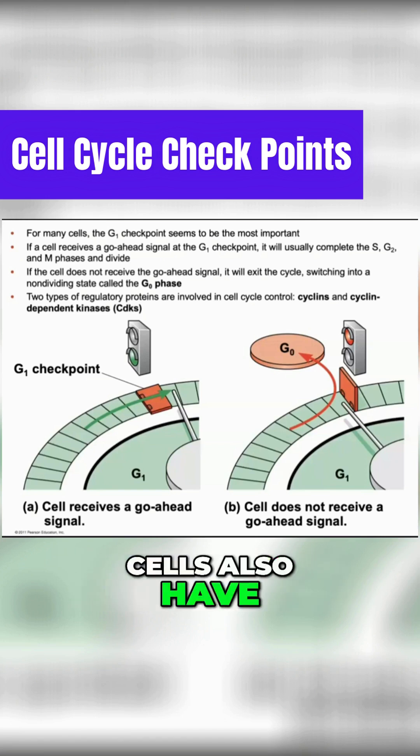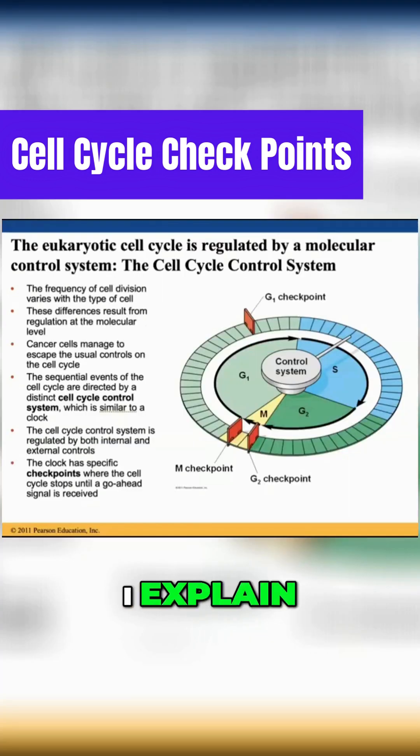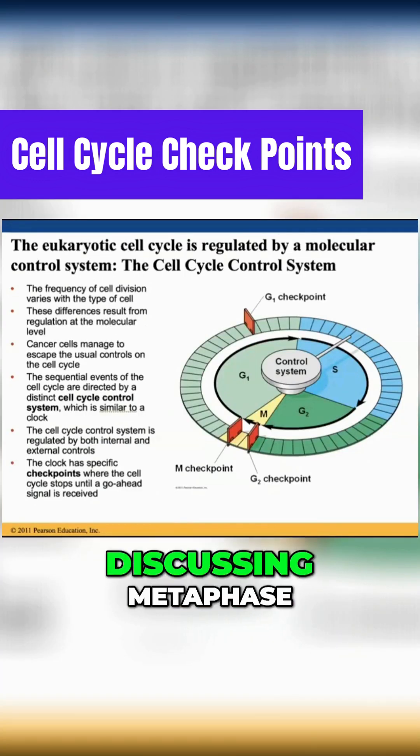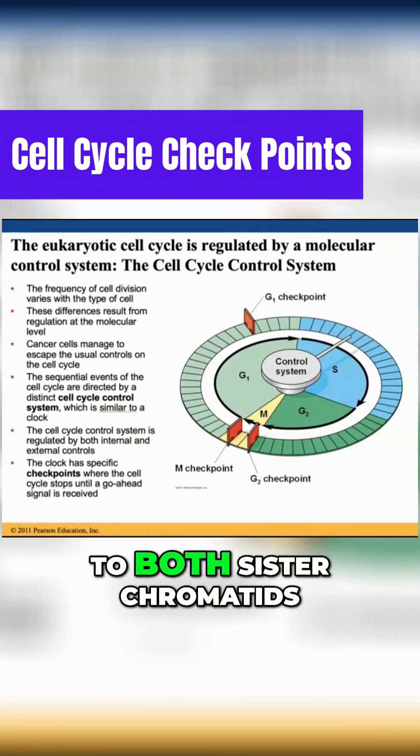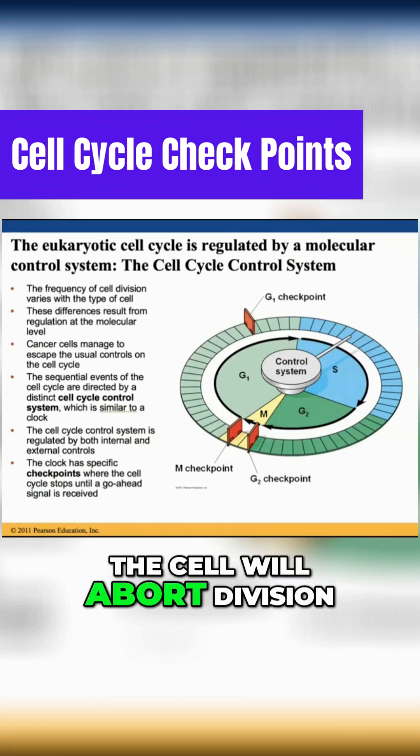Cells also have a checkpoint at G2 and M phase. I explain the M phase checkpoint while discussing metaphase. If the mitotic spindle is not properly attached to both sister chromatids, the cell will abort division.